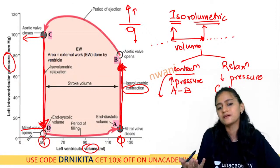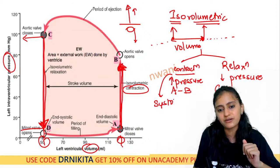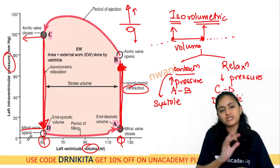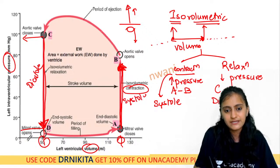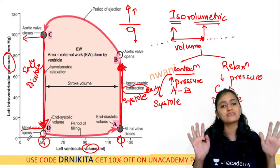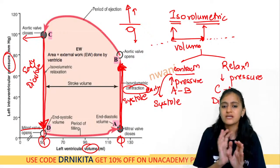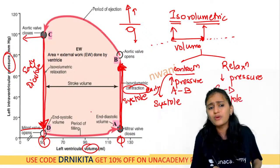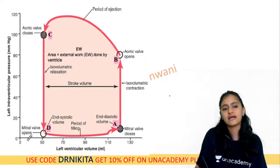Isovolumetric contraction is part of systole; isovolumetric relaxation is part of diastole. This is early diastole and this is early systole. The volume is not changing because the valves are closed — there is no place for blood to go, so it remains isovolumetric.